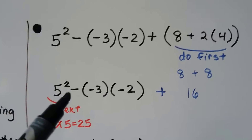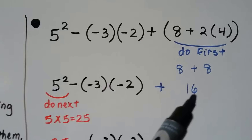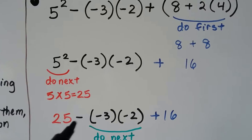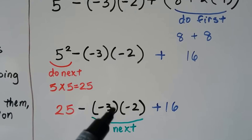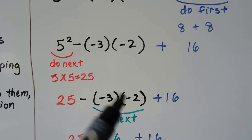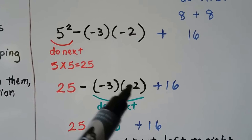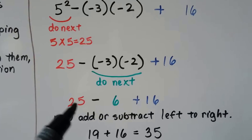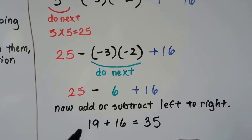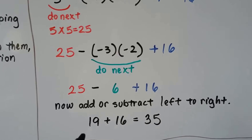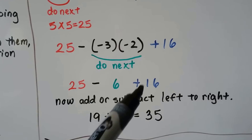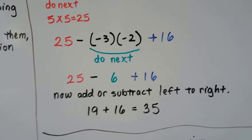Now we have 5 squared minus negative 3 times negative 2 plus 16. We do the exponent next: 5 times 5 is 25. Now we have 25 minus negative 3 times negative 2 plus 16. Because of the multiplication, we do that next: negative 3 times negative 2 — two negatives make a positive 6. We have 25 minus 6, which is 19, plus 16. Adding and subtracting left to right, we get 35.